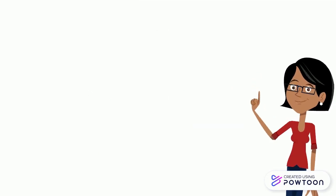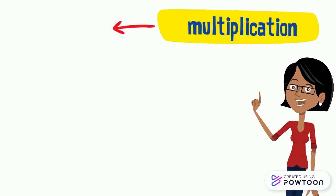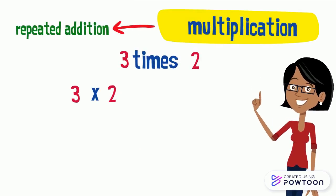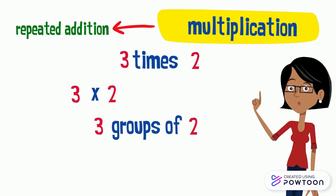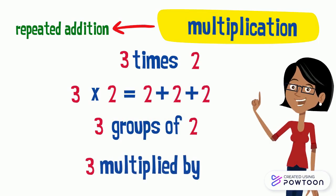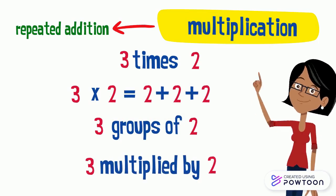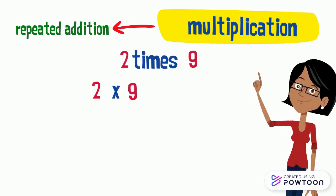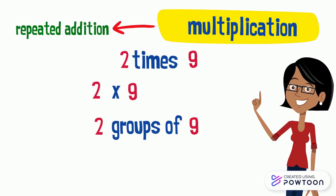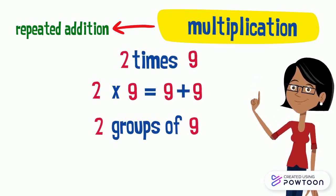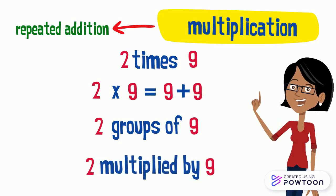So we should remember that multiplication is a repeated addition. For example, 3 times 2 tells us that we have 3 groups of 2 — it is 2 plus 2 plus 2, or we can read it as 3 multiplied by 2. Another example: 2 times 9 represents 2 groups of 9. It is 9 plus 9, or we can read it as 2 multiplied by 9.